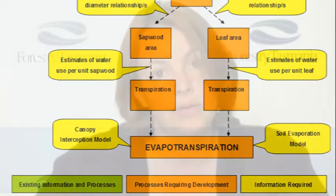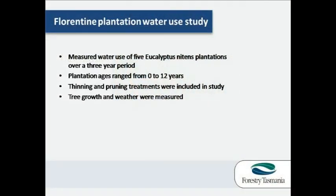As part of the study we have been doing three main things. We have had new field work involving measurements of transpiration, canopy interception, soil evaporation, climate and growth of plantations in Tasmania. We are also looking at existing models such as Kabbalah and ProMod that predict both growth and water use of plantations, and we have been reviewing the existing literature and trying to use existing information where available.